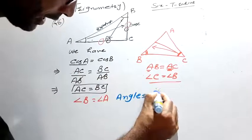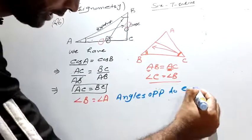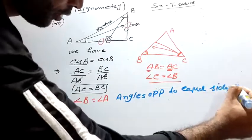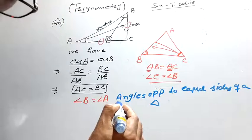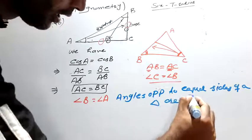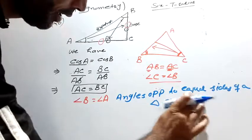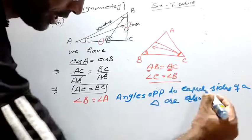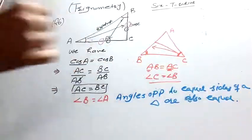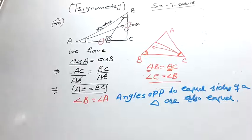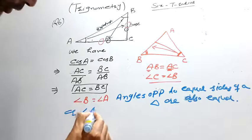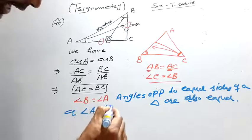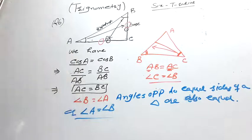Angles opposite to equal sides of a triangle are also equal. Therefore, angle B is equal to angle A. Question number 6 is complete.